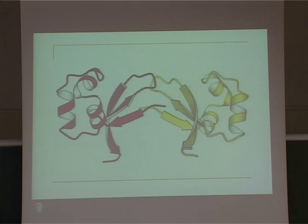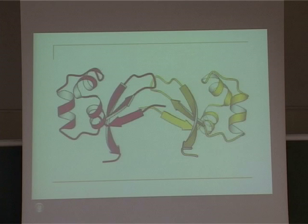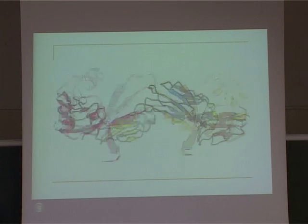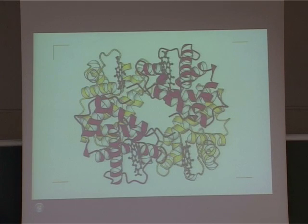Here is one example of quaternary structure — interaction of two identical amino acid chains, which is called a homodimer. If the chains have different sequences they are called a heterodimer. We also have a tetramer, composed of four chains — like hemoglobin, where two identical pairs of chains, four in total, interact with each other to form the larger functional protein structure.